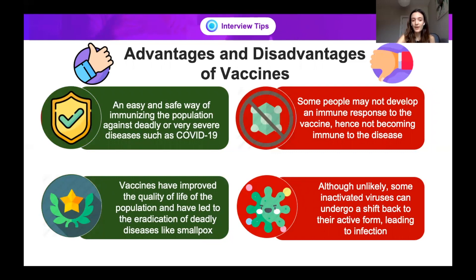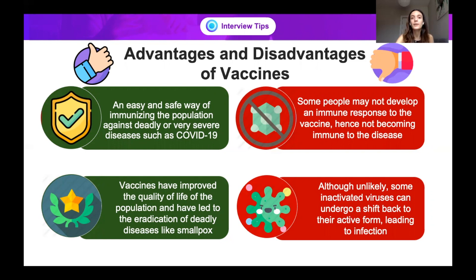In terms of another advantage, vaccines have improved the quality of life of the population and have led to the eradication of deadly diseases like smallpox. On the other side, however, although unlikely, some inactivated viruses can become reactivated, undergo a shift back to their active form, and that could lead to infection with that particular pathogen — though that's quite unlikely to happen in normal human beings.